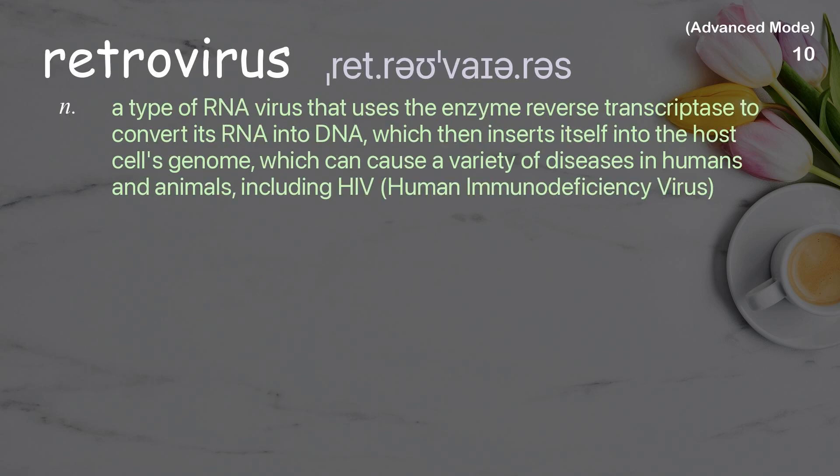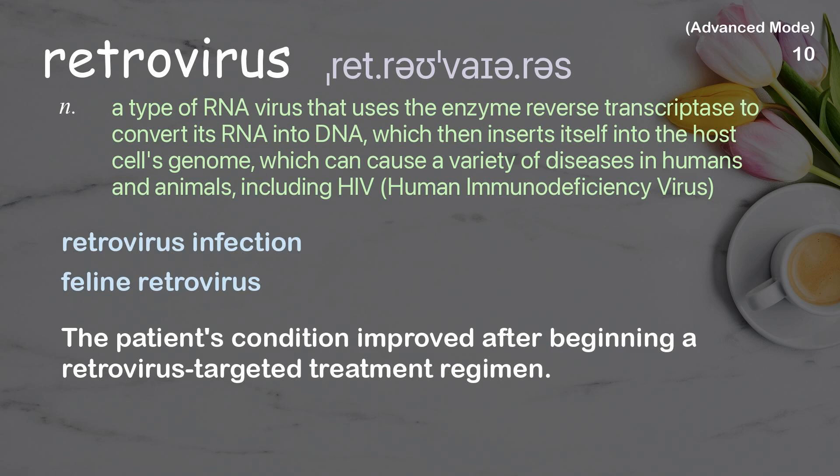Retrovirus: a type of RNA virus that uses the enzyme reverse transcriptase to convert its RNA into DNA, which then inserts itself into the host cell's genome, which can cause a variety of diseases in humans and animals, including HIV, human immunodeficiency virus. Examples: retrovirus infection, feline retrovirus. The patient's condition improved after beginning a retrovirus-targeted treatment regimen.